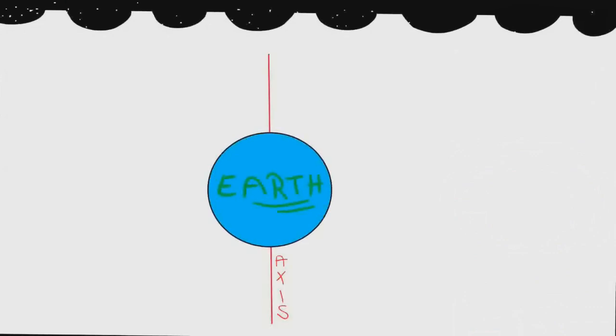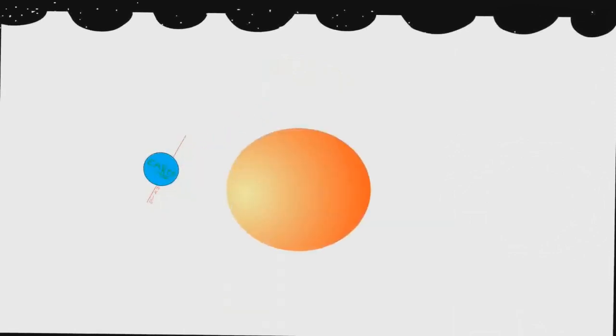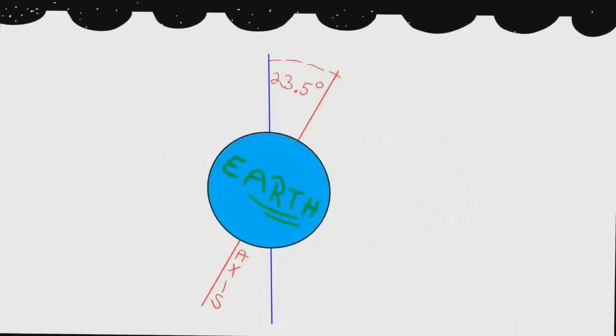Earth also has an axial tilt. It's tilted at approximately 23.5 degrees, and this causes most of the temperature changes that are associated with the seasons. When tilted towards the Sun it's summer. Six months later, when tilted away from the Sun, it will be winter. The actual tilt does not change. The position of Earth changes compared to the Sun.